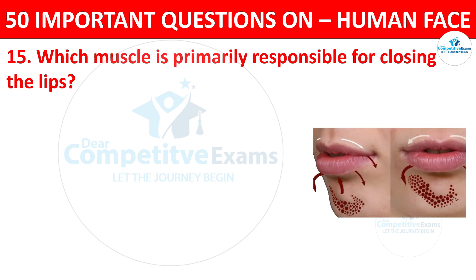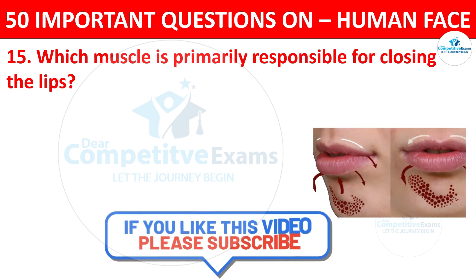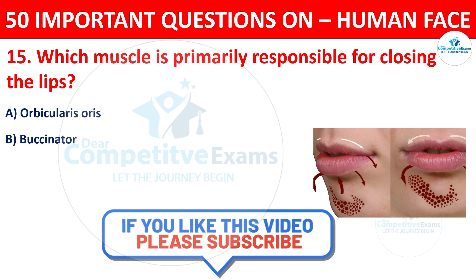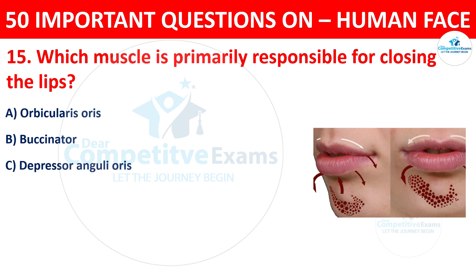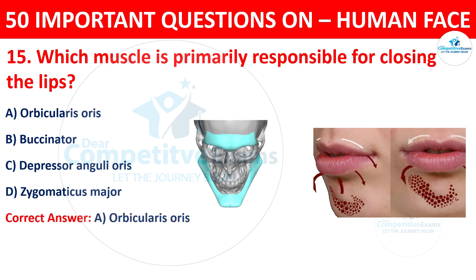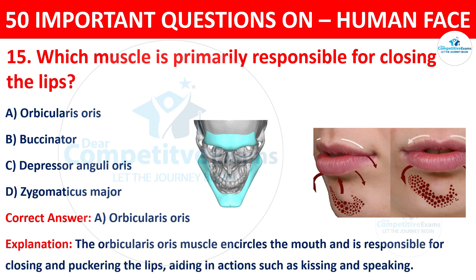Question number fifteen: which muscle is primarily responsible for closing the lips? The options are orbicularis oris, buccinator, depressor anguli oris, or zygomaticus major. The correct answer is A, orbicularis oris. The orbicularis oris muscle encircles the mouth and is responsible for closing and puckering the lips, aiding in actions such as kissing and speaking.